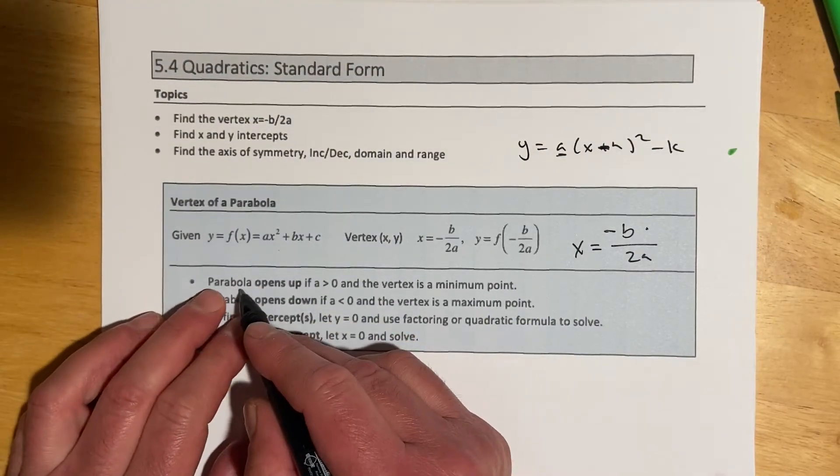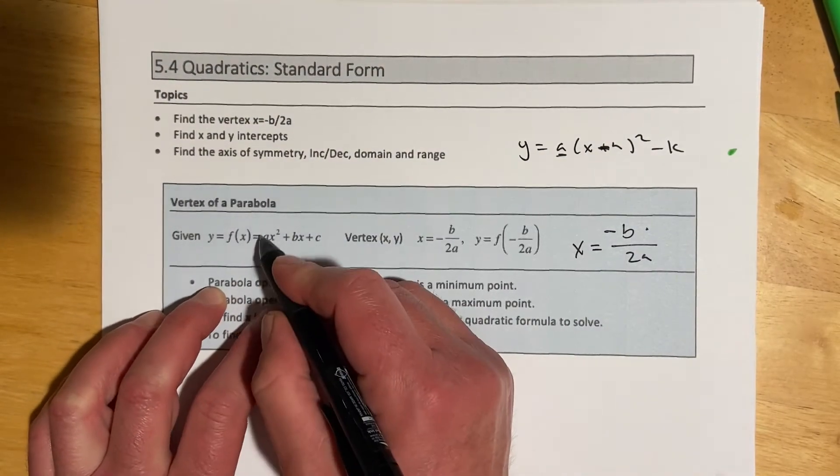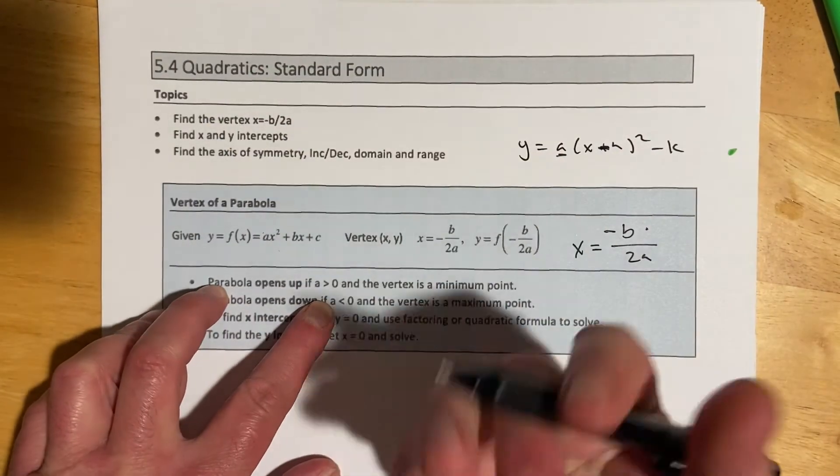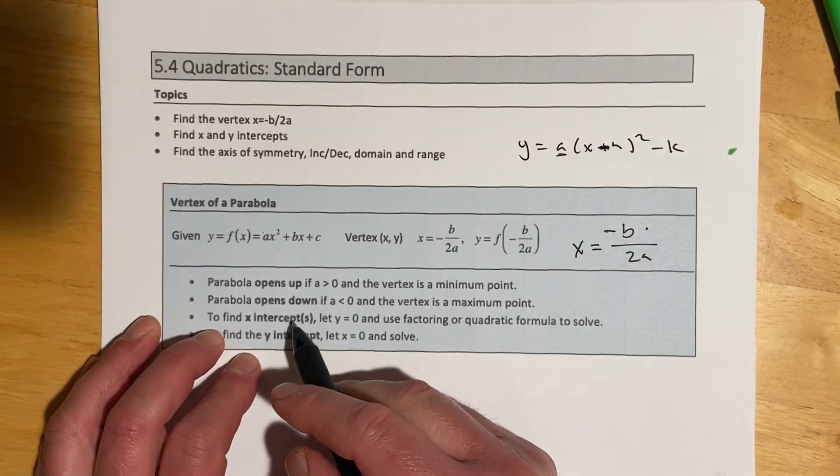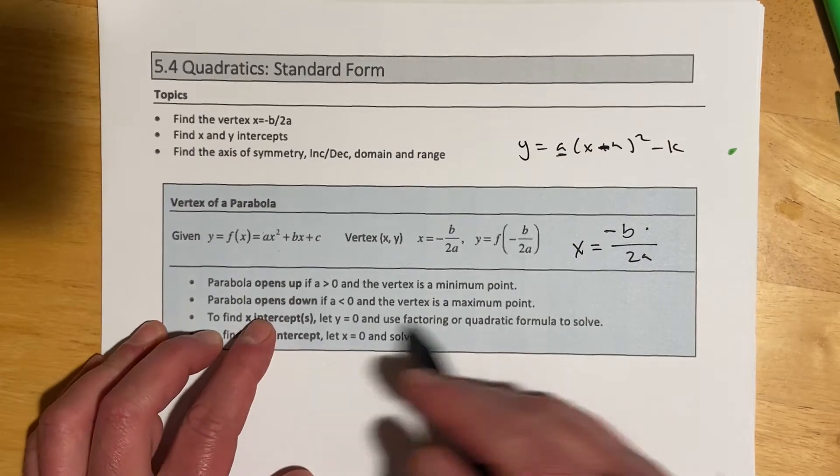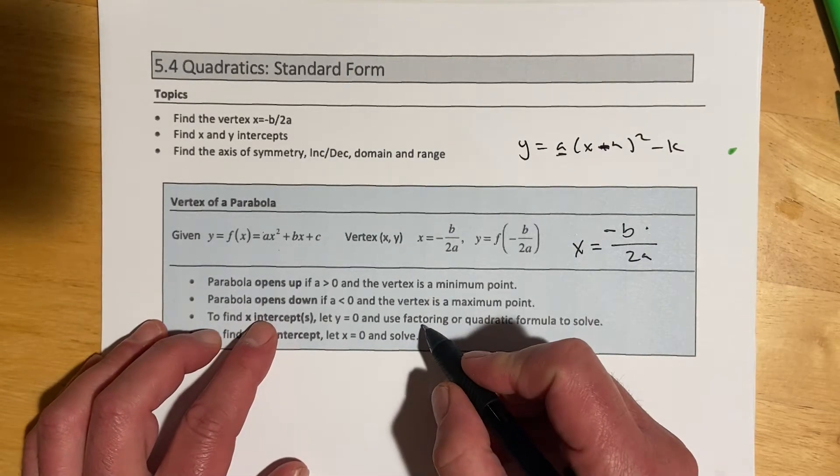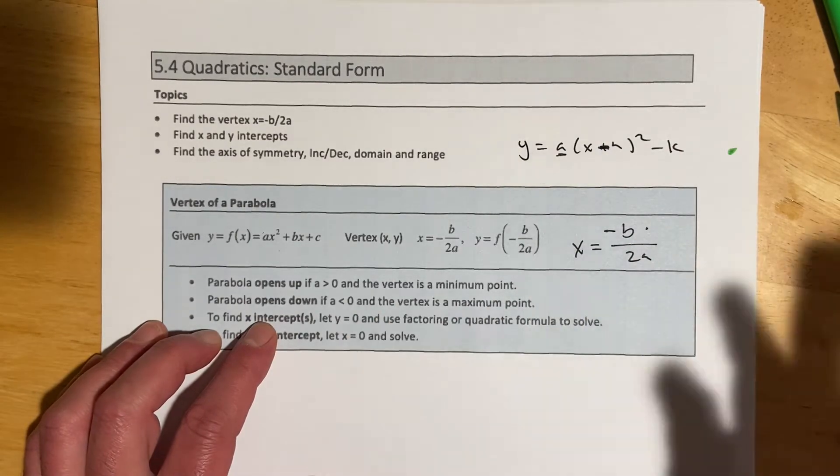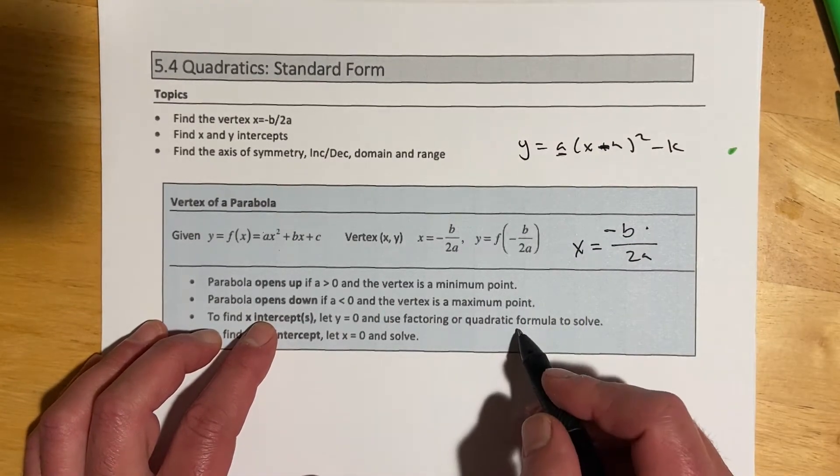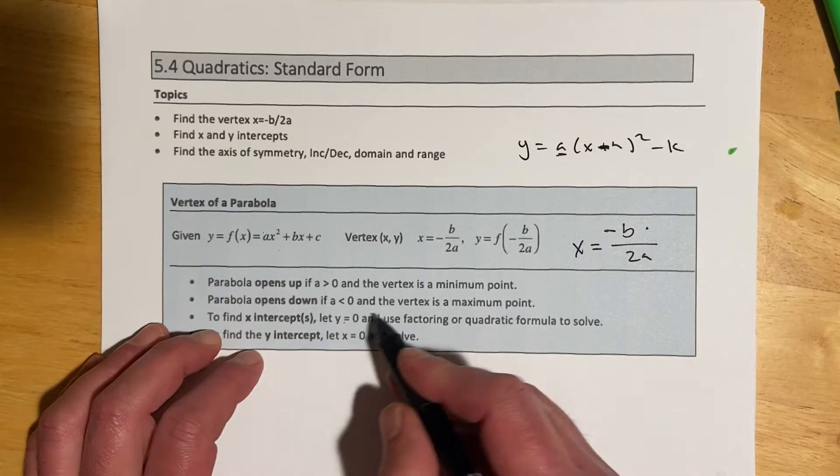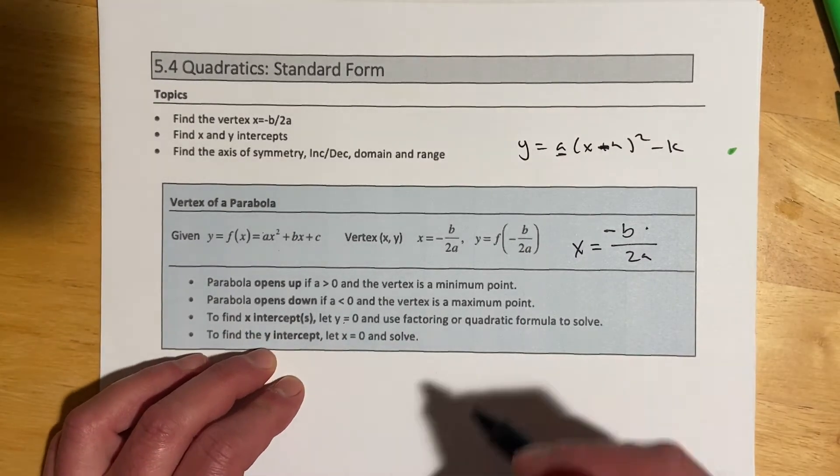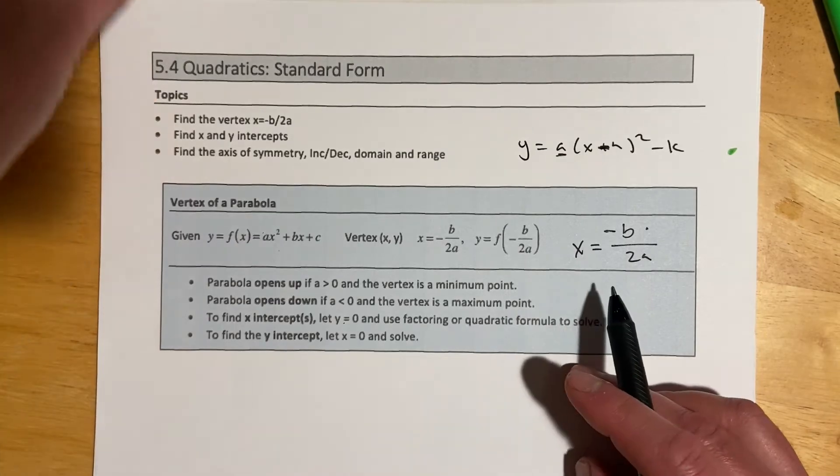So a few more things here. Parabolas open up if a is greater than 0. To find x-intercepts, we let y equal 0. And we can either factor, use the quadratic formula, or finish completing the square. And then to find the y-intercept, we let x equal 0. So let's look at that with some examples.